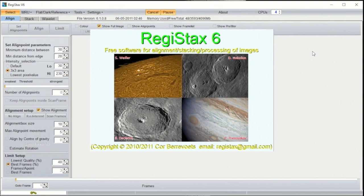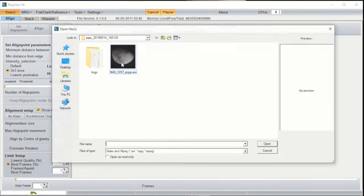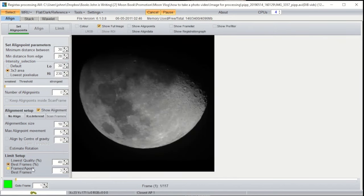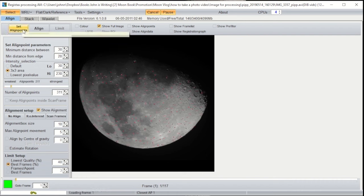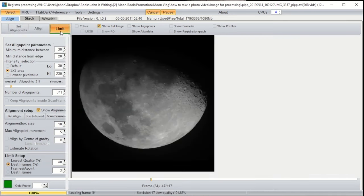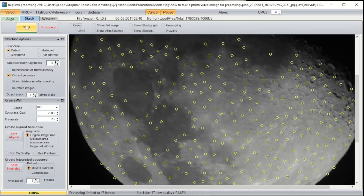Now we're ready to stack the frames from the video into one image. We're going to use a program called Registax, which you can download for free on the internet. Once you've opened Registax, hit select and choose the AVI file you just created in PIPP. The first thing to do is tell the program to select the best frames. This will reject any blurry frames from the image. Then hit set align points and align. Now we're going to hit limit and then stack.